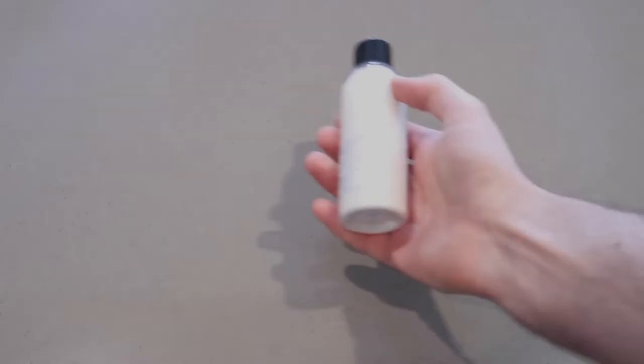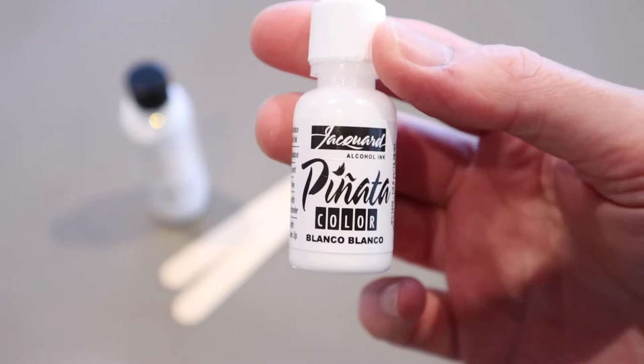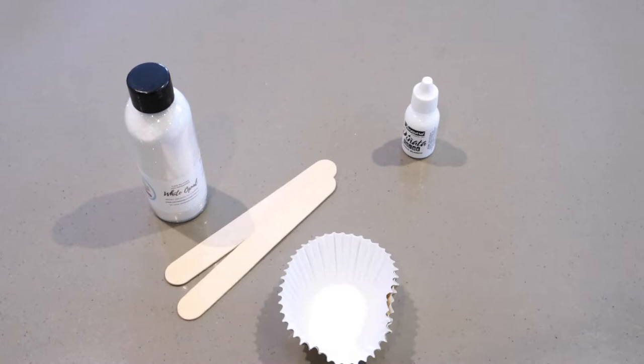Now you'll need to grab some white opal glitter, popsicle sticks, white alcohol ink which I'm using Pinata Blanco Blanco but you can use any white ink that you'd prefer. The resin can be poured into a cupcake patty, cardboard or silicone cup. Grab a 10ml syringe and a small flat edge scoop for drawing up the glitter.